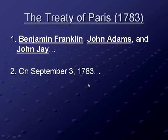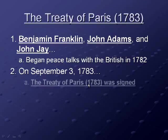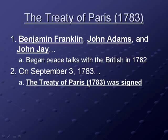The Treaty of Paris, 1783 — this is the second Treaty of Paris we've talked about. The first one ended the French and Indian War, or the Seven Years' War. This 1783 version ends the Revolutionary War. Americans Benjamin Franklin, John Adams, and John Jay began peace talks with the British in 1782, and on September 3rd, 1783, the Treaty of Paris was signed.